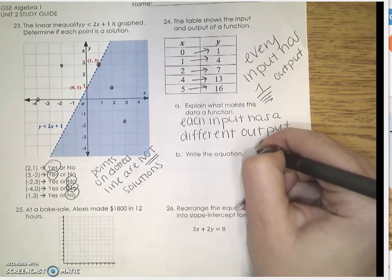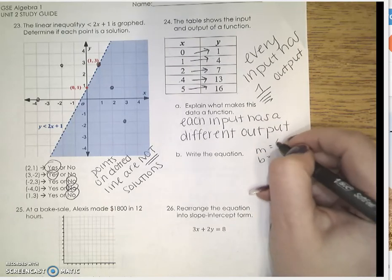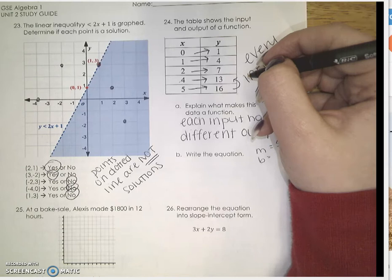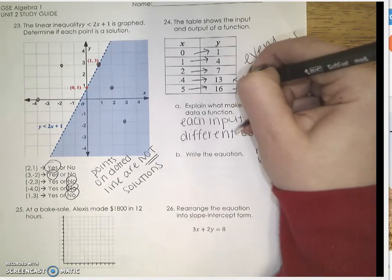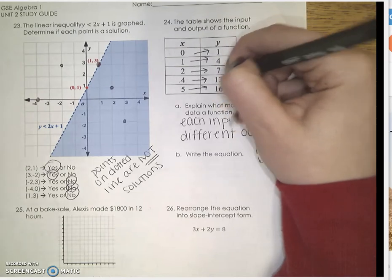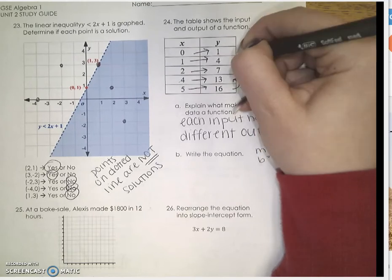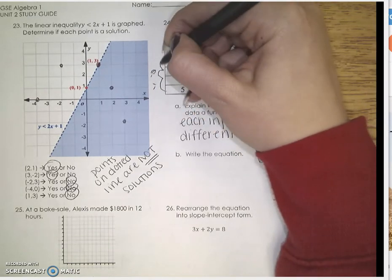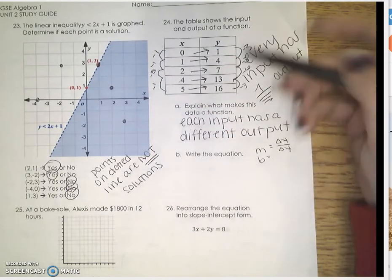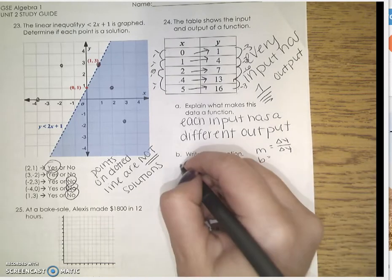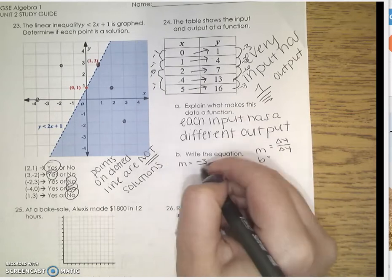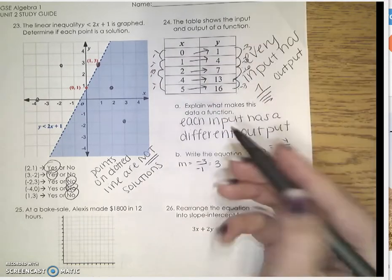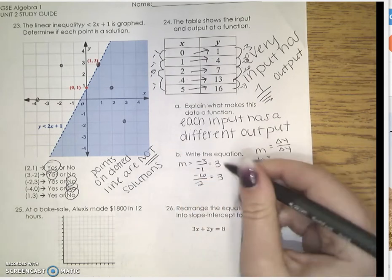We need to write an equation to model this. So again, I need my slope and my y-intercept. My slope is going to be my change in y over my change in x. Every change, it's going down by 3. So 16 to 13 is minus 3, 13 to 7 is minus 6, 4 to 7 is minus 3, 4 to 1 is minus 3. 5 to 4 is minus 1, 4 to 2 is minus 2, 2 to 1 is minus 1, 1 to 0 is minus 1. So I'm going to take my change in y, which is negative 3, over my change in x, which is negative 1, and that gives me 3. I have minus 6 here and minus 2 here. So negative 6 over negative 2 is also 3. So this has a constant rate of change.